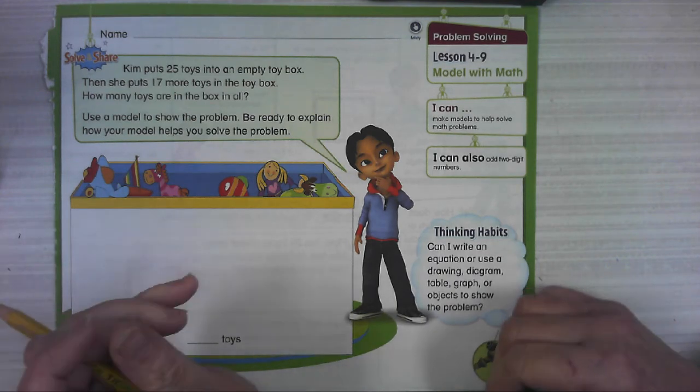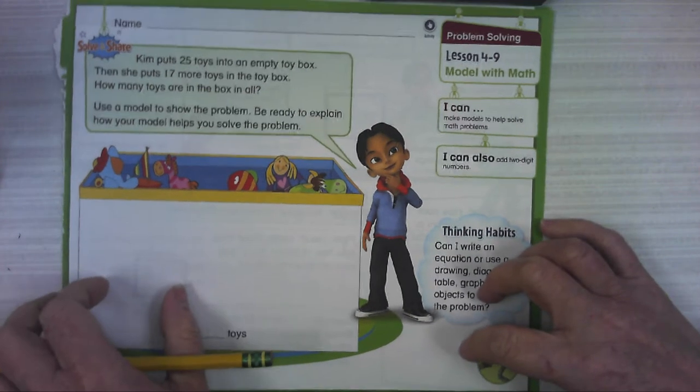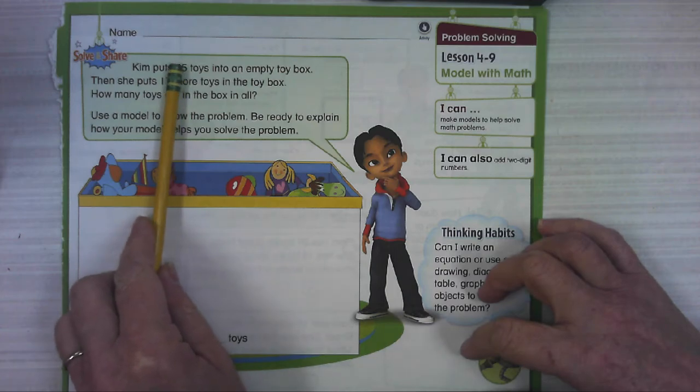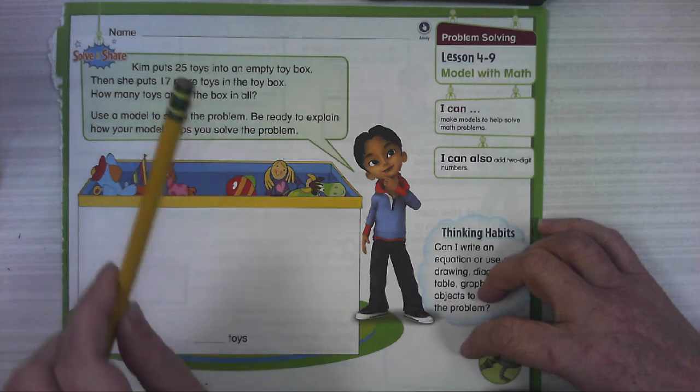Okay, remember sometimes it's helpful if we take the numbers out and read the problem without the number so we can really visualize it. Kim puts some toys into an empty toy box, then she puts some more toys into the toy box. How many toys are in the box in all?